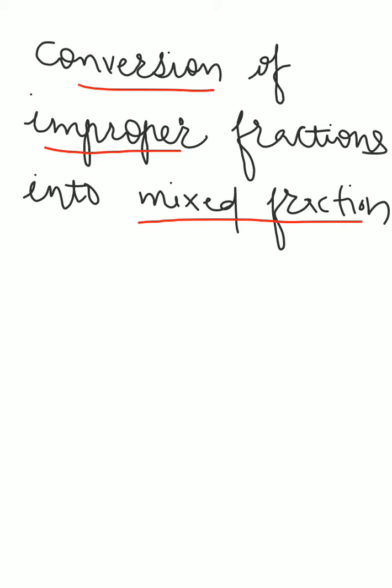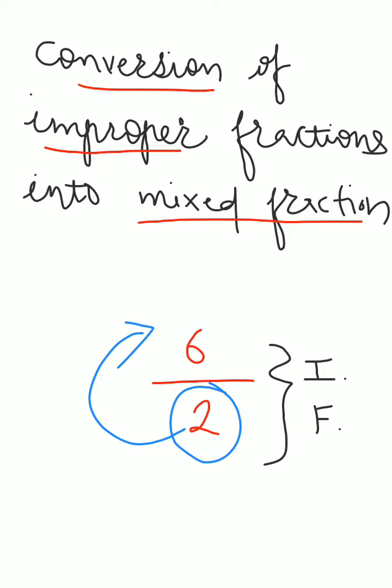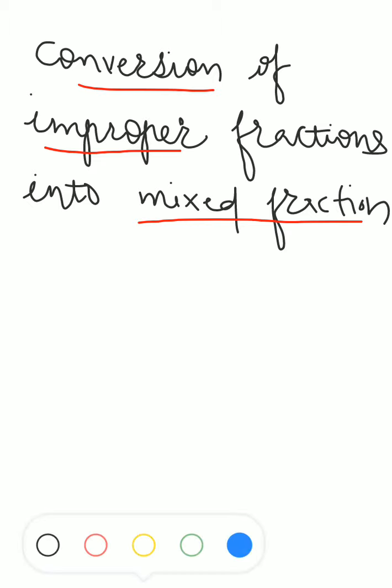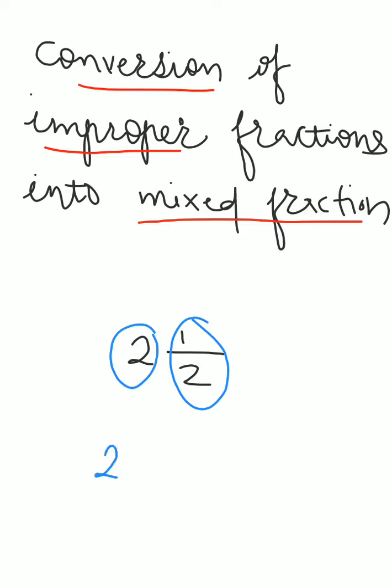I hope you all remember what are improper fraction and mixed fraction. But let's just take a quick revision. Improper fractions kya hota hai? When denominator of the fraction is smaller and numerator of the fraction is bigger. This fraction are called as improper fractions. And what are mixed fraction? In mixed fraction, there will be two things mixed: whole number and fraction. 2 is whole quantity and then part that is 1 by 2. This kind of fractions are called as mixed fraction.